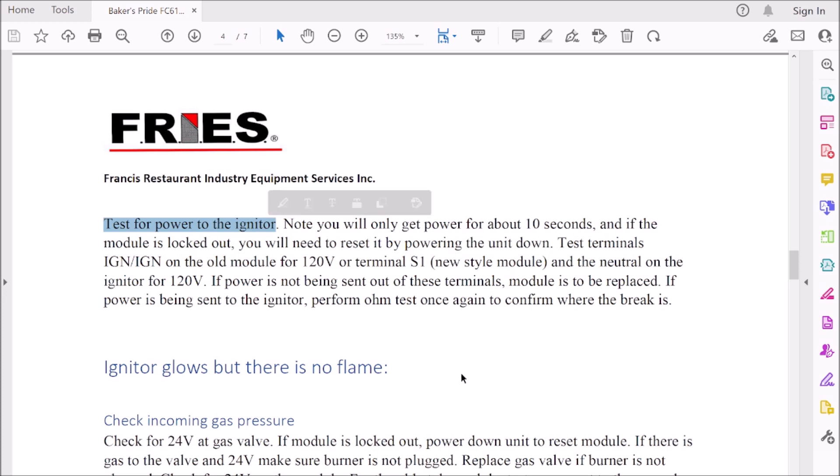This next step is pretty important: testing for power to the igniter. What happens on these a lot is the igniter will actually short out and blow the module. The module will send incorrect voltage to the igniter and you may blow the new igniter. Vice versa, if you have a bad module and the igniter is shorting out and you change that module, you will short the module because the igniter is bad.